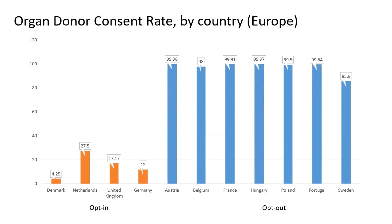One of the biggest problems medicine faces is the lack of organ donors. Looking at the consent rate by country across Europe, the key difference is whether you opt in — meaning you have to say yes, I want to be an organ donor, like we do in the US — or you opt out. For countries where you have to opt out, the consent rate is incredibly high, but where you have to opt in, it's quite low, as it is here in the US. Part of this is understanding cultural aspects and how to adjust them for the betterment of society.